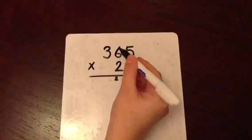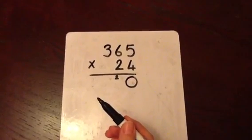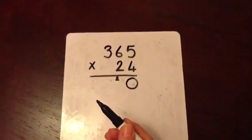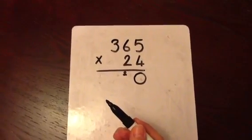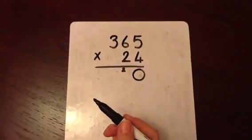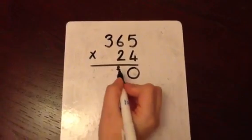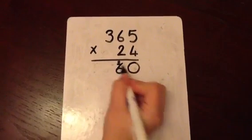4 multiplied by 6 is 24. We add on the 2 units we've carried across to give us a total of 26. We can write the 6 in the tens column and carry those 2 across.